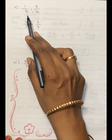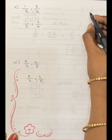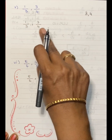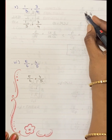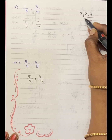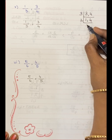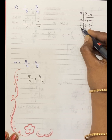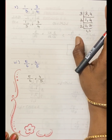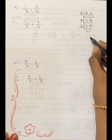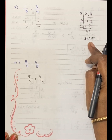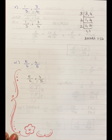5th sum: 1 by 3 and 3 by 4. The denominators are 3 and 4. Using prime factorization for LCM: 3 tables — 1 time 3 is 3; 2 tables — 1, 2; again 2 tables — 1, 1; direct 4, 1. Prime factorization gives 3 into 2 into 2. So 3 twos are 6, 6 twos are 12. LCM is 12.